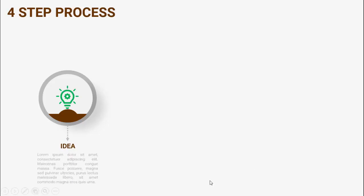In today's tutorial I'm going to show you how to create a four-step growth slide in PowerPoint. When I click, the first step comes — I've put the first step with an idea, represented by a bulb icon, where the idea can be converted into different things. You can replace the text and add more detailed text.